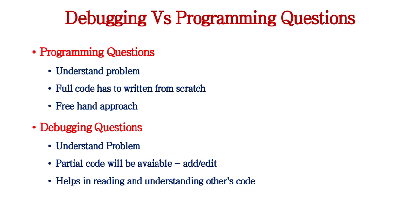When you look at a programming question, you will be given a problem to solve. You have to read the problem, understand it, and write the full code from scratch. You have a free-hand approach — you can choose whatever language and constructs you want. Whereas in a debugging question, there will also be a problem statement, but when you look at the code section, it will not be empty; instead, a partial code will be available.